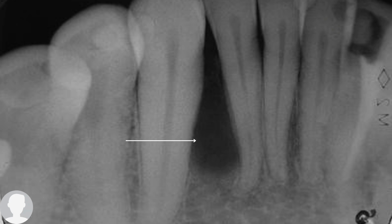Another patient came with a chief complaint related to one of his upper anterior teeth. As a general practitioner, we decided to take multiple x-rays as part of the clinical examination for the other teeth. We found, as you can see in the periapical image, a teardrop radiolucency located between the canine-premolar area, on the lateral side of the tooth. The associated teeth are vital and non-carious. The patient was informed this is a lateral periodontal cyst, which is completely asymptomatic and requires treatment.